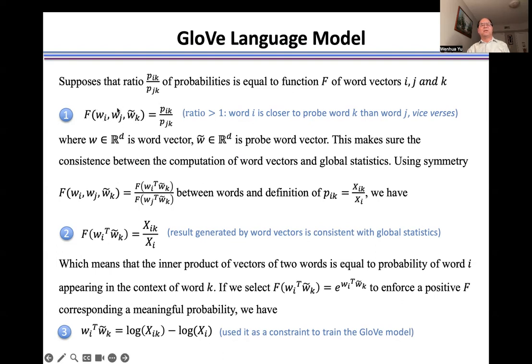If in feature space, word i is close to word k, then j, and in global statistics, the co-occurrence probability of i and k is larger than the co-occurrence probability of j and k.